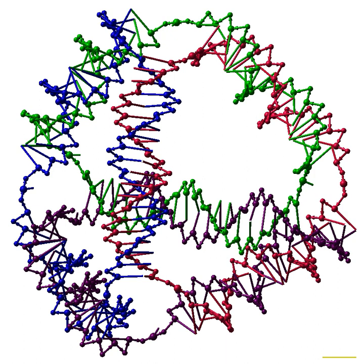Cascades of strand displacement reactions can be used for either computational or structural purposes. An individual strand displacement reaction involves revealing a new sequence in response to the presence of some initiator strand. Many such reactions can be linked into a cascade where the newly revealed output sequence of one reaction can initiate another strand displacement reaction elsewhere, allowing for the construction of chemical reaction networks with many components exhibiting complex computational and information processing abilities. These cascades are made energetically favorable through the formation of new base pairs and the entropy gain from disassembly reactions. Strand displacement cascades allow isothermal operation of the assembly or computational process, in contrast to traditional nucleic acid assemblies' requirement for a thermal annealing step.